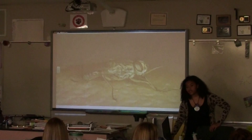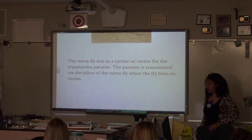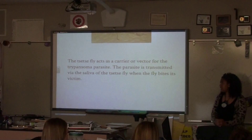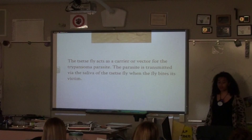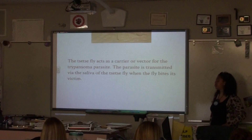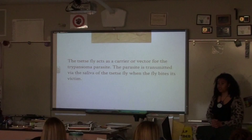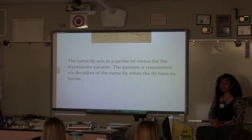Here's a tsetse fly, and that is the vector for Trypanosoma. The tsetse fly just has the Trypanosoma parasites living in its gut and salivary glands. When it bites a human, it's able to infect that individual. However, the Trypanosoma share a commensalistic relationship with the tsetse fly, so the tsetse fly is not affected by them at all.